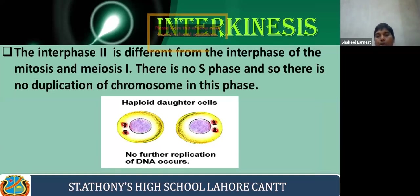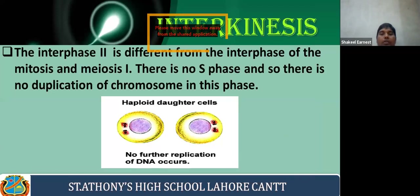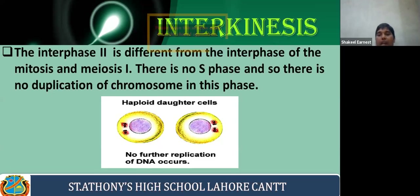There is no S phase in interkinesis — the interphase between meiosis one and meiosis two. In interphase two, there is no S phase, meaning there is no duplication of chromosomes in this phase. The chromosomes are not replicated before meiosis two begins.